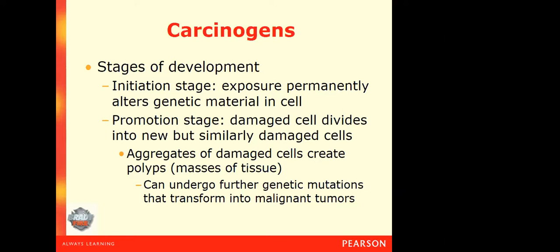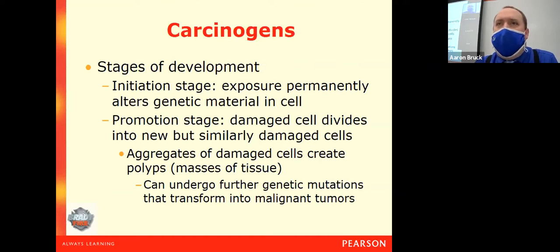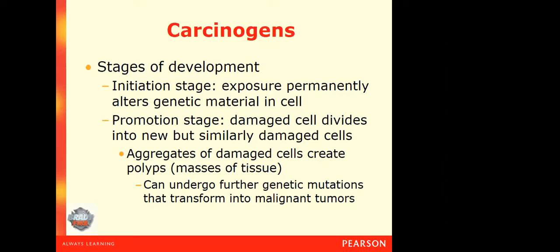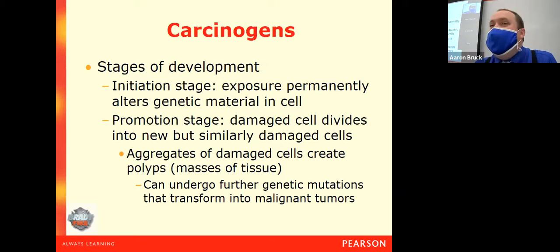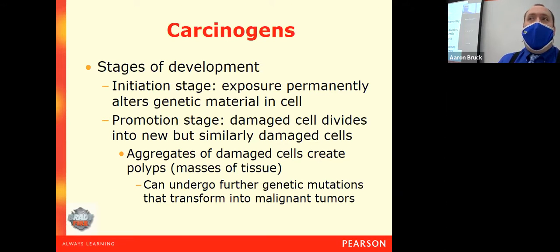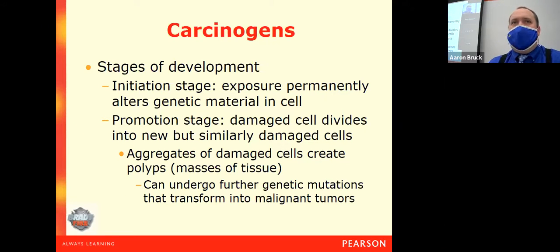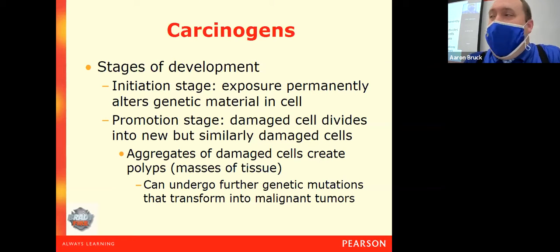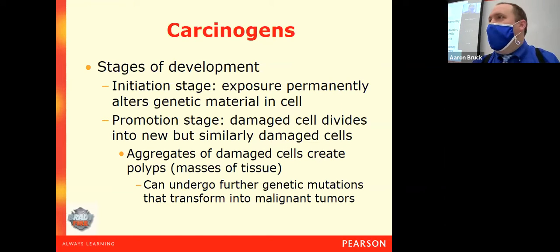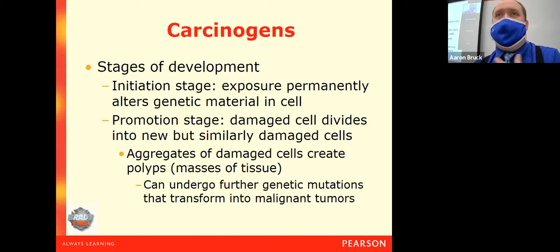Sometimes these genetic mutations ultimately turn polyps, which can be benign and not necessarily harmful, into malignant tumors. Once we go from benign to malignant, then we've got a real problem. A malignant tumor can start going after other body systems, attacking organs, and it goes from just being a lump of cells to a dangerous lump of cells that can potentially cause other lumps in other parts of your body.